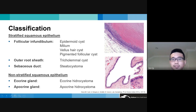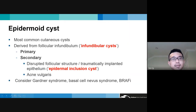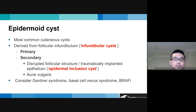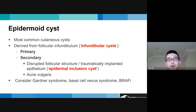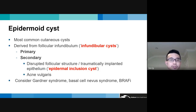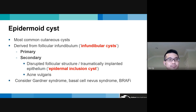Epidermoid cysts are the most common cutaneous cysts, derived from the follicular infundibulum — hence sometimes called infundibular cysts. They can occur primarily or secondary to disrupted follicular structure or traumatic epithelial implantation, and are also known as epidermal inclusion cysts. One setting where you see this is in patients with acne vulgaris.